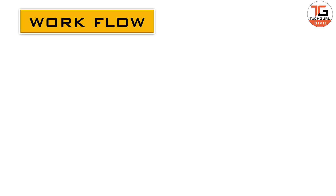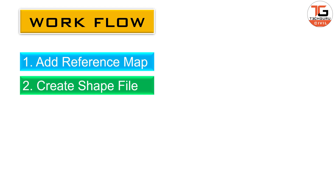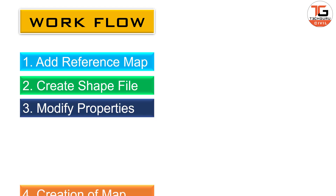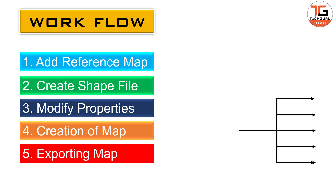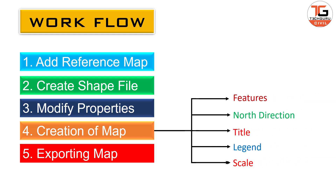Here we are going to take one task: creating a map. The workflow to create that map in QGIS has five simple steps: adding the reference map, creating shape files and modifying their properties, creation of the map, and exporting that map as an image as well as a PDF file. In the fourth step, creation of the map, we again have five simple steps: adding the features, north direction, title, legend, and scale.